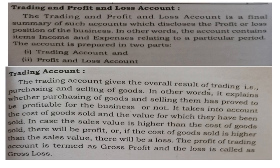The trading and profit and loss account is a final summary of such accounts which disclose the profit or loss position of the business. In other words, the account consists of items of income and expenses relating to a particular period. The trading account gives the overall result of trading, that is purchasing and selling of goods. It explains whether purchasing and selling of goods has proved to be profitable for the business or not. It takes into account the cost of goods sold and the value at which they have been sold.